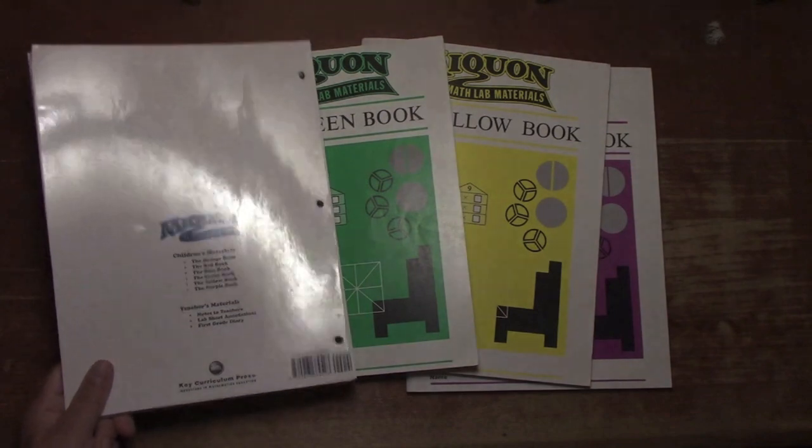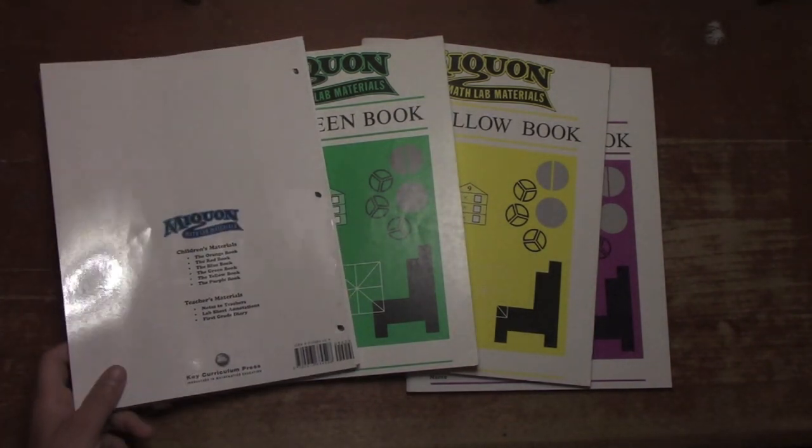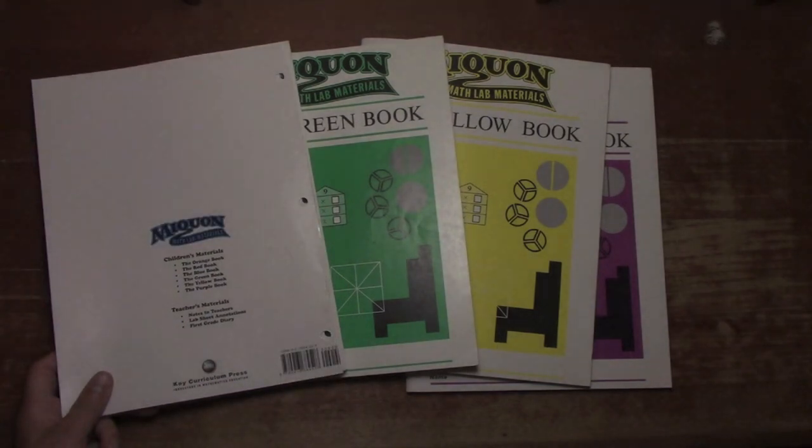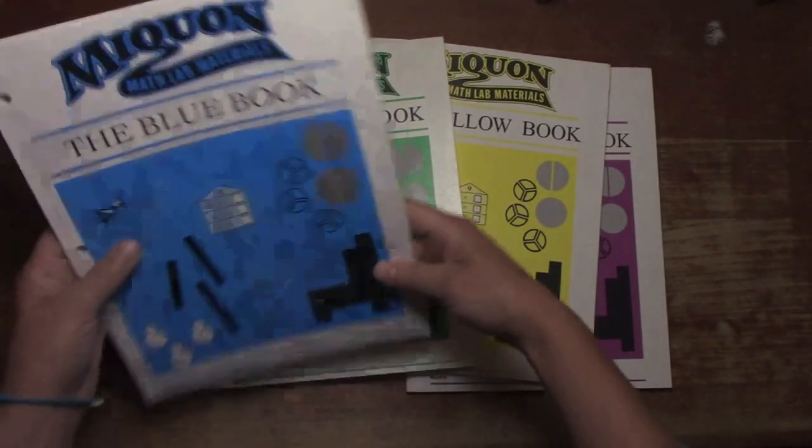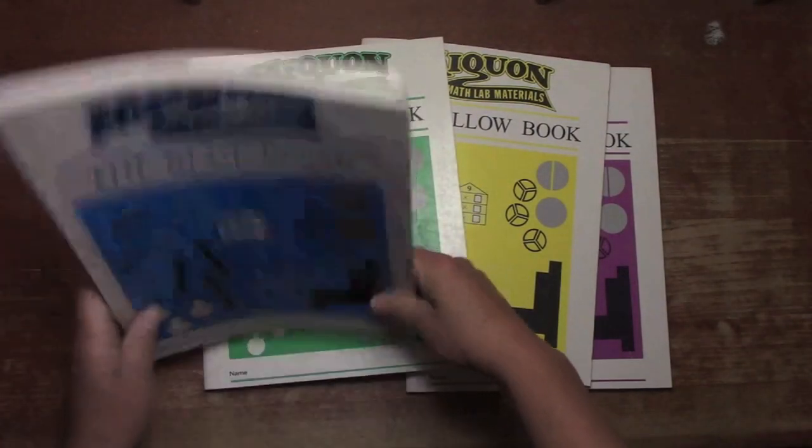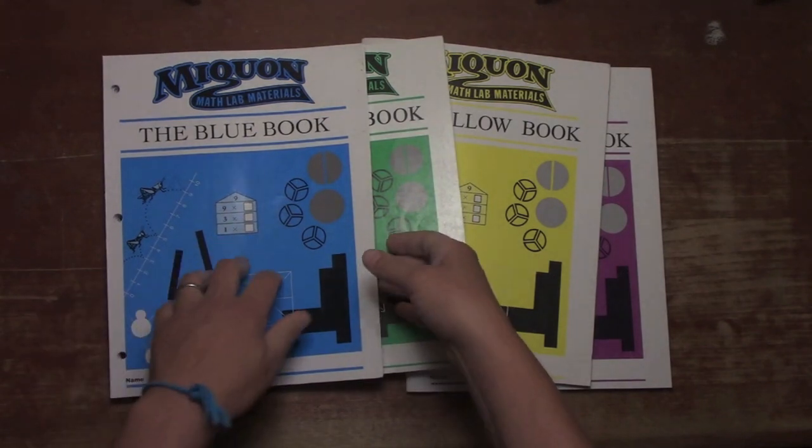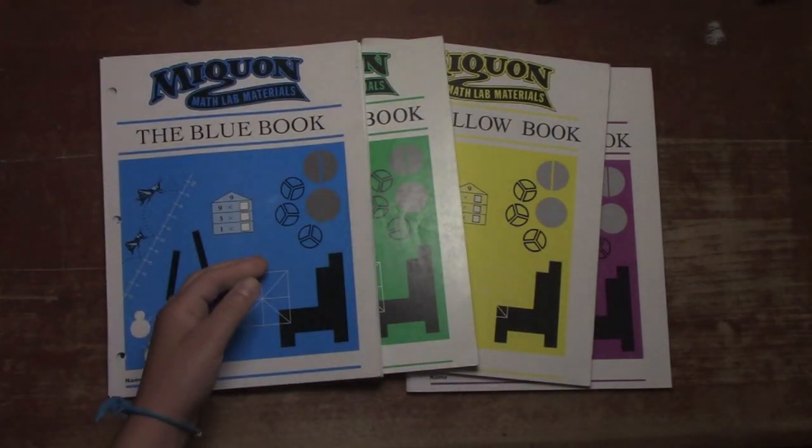There's also some notes to teachers and some lab sheet annotations and a diary for your student to keep. So let's open up and take a look at what the actual student book looks like. Now you can see I've cut the binder off this one. That's because of my incessant need for not using disposable books as disposable, but to photocopy them.